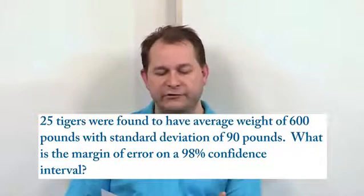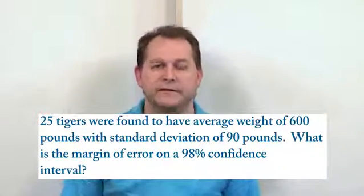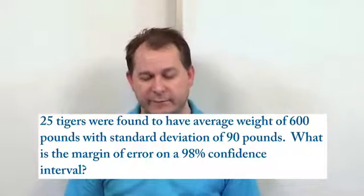So the best we can do is regionally, we find 25 tigers locally that we can go weigh, but we're limited on that. So this is a practical example of when it might be tough to get over 30, a sample size over 30.